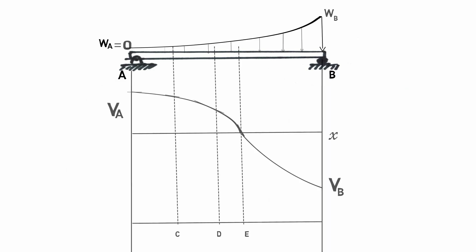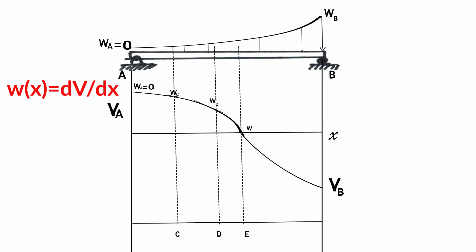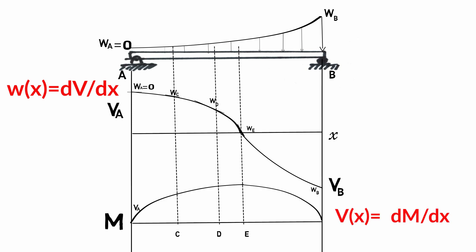Relationships among load and shear force: the slope of the shear diagram V versus X at each point is equal to the intensity of the distributed loading at that point: w(x) = dV/dx. Similarly, the slope of the moment diagram M versus X at each point is equal to the shear load V at each point: V(x) = dM/dx.